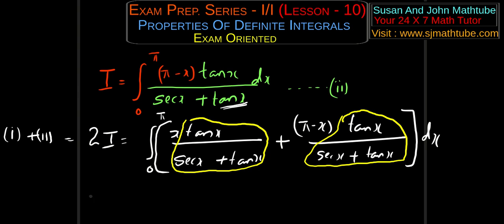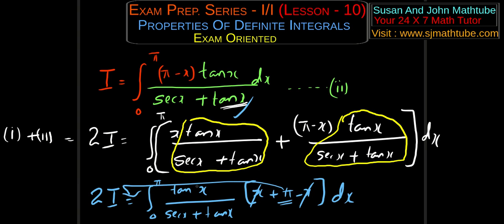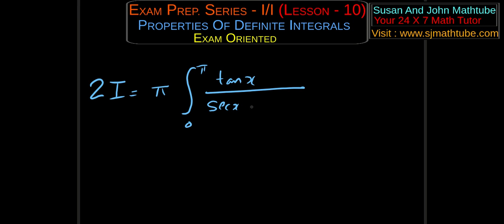So in the next step: x and π minus x sum to π, which is a constant I put outside. We get 2I equals π times integral from 0 to π of tan x over (sec x plus tan x) dx. I hope you are working the problems along with me — that will be the most effective method. You can pause the video whenever you want.